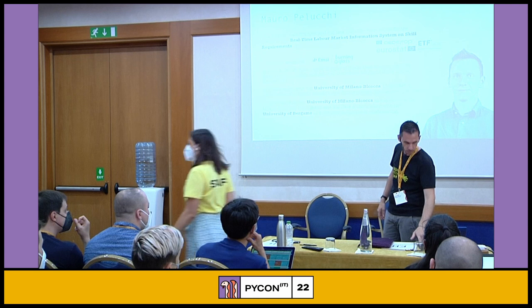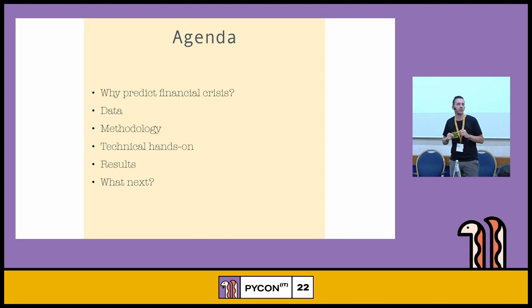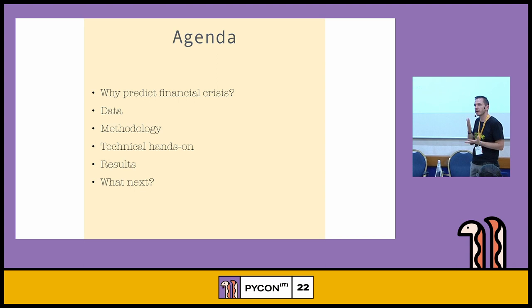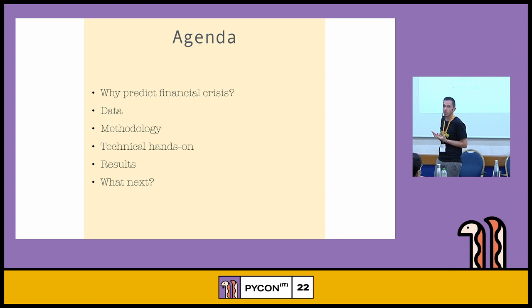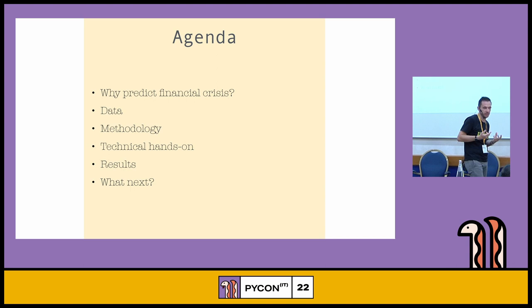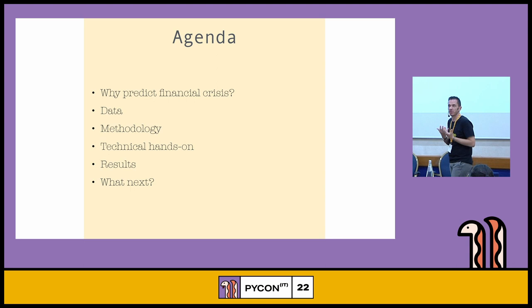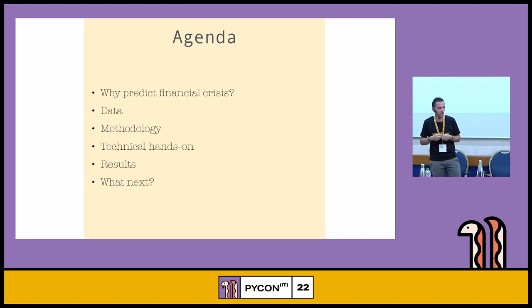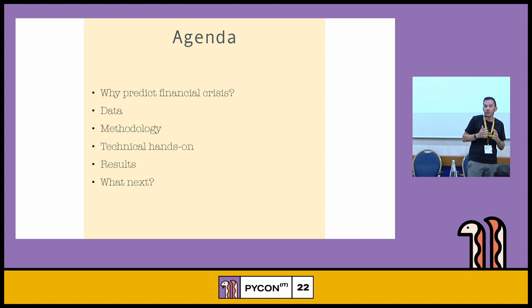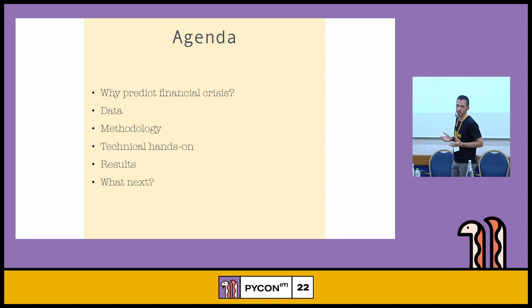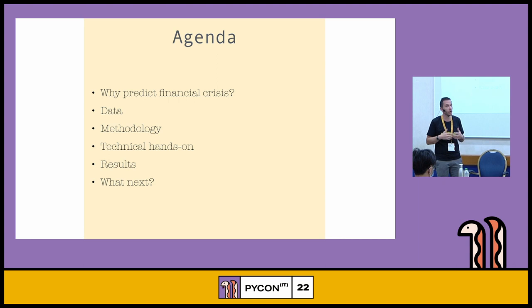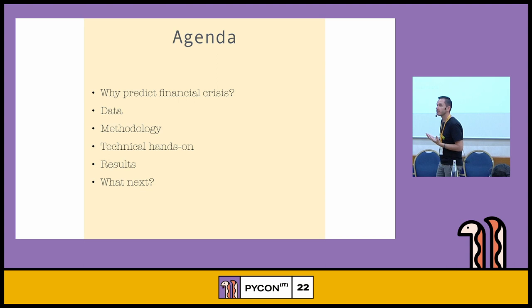My topics for today: first, we will see why we need to understand what is happening in the financial and economic market, and why we need to predict the next recession or financial crisis. Next, we will talk about the data, because to train a machine learning model it is very important to have good quality data. Then the methodology I usually apply for this type of topic, and a brief technical section. The code is on GitHub so you can download my notebook and use it — I don't want to spend 10 minutes showing code. I want to stay here with you and speak about the results.